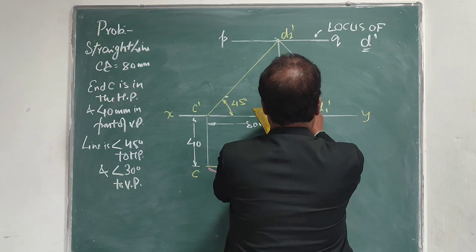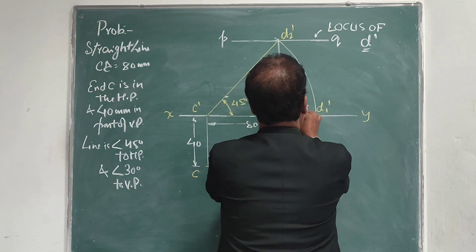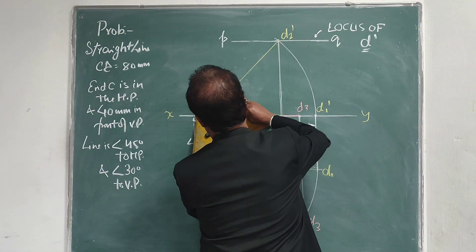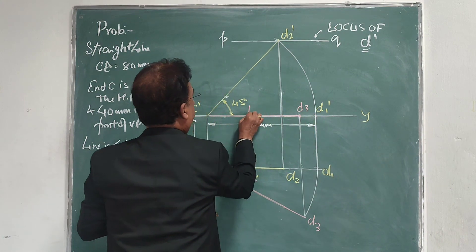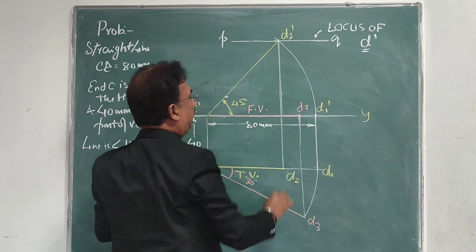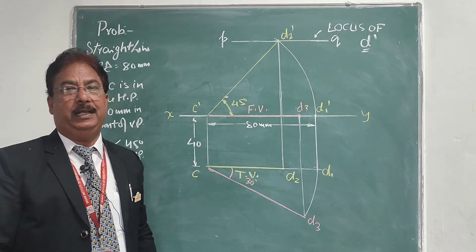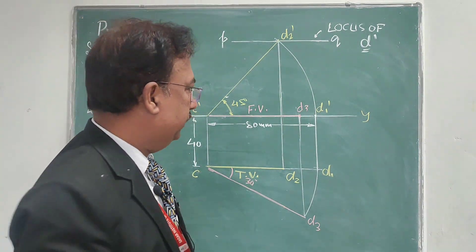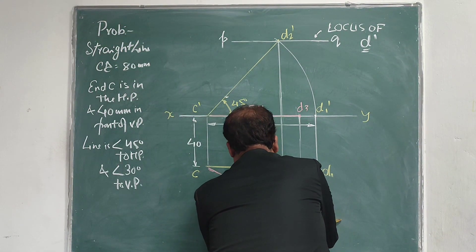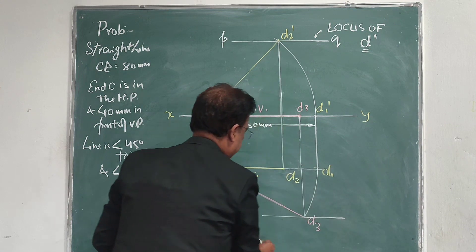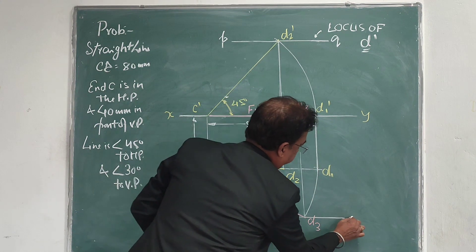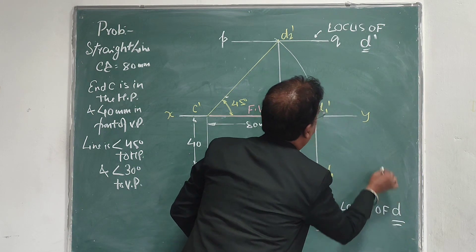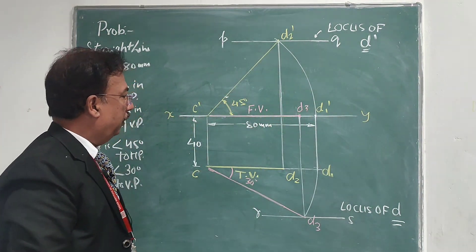So this point is D3-dash. I darken this line — this is D3-dash and this will be the front view. As you know, if the same line is also inclined to the VP, the length of the front view is not going to change again. So this is our final front view. If I draw a parallel line from D3, this will be the locus of point D. This is D-dash.